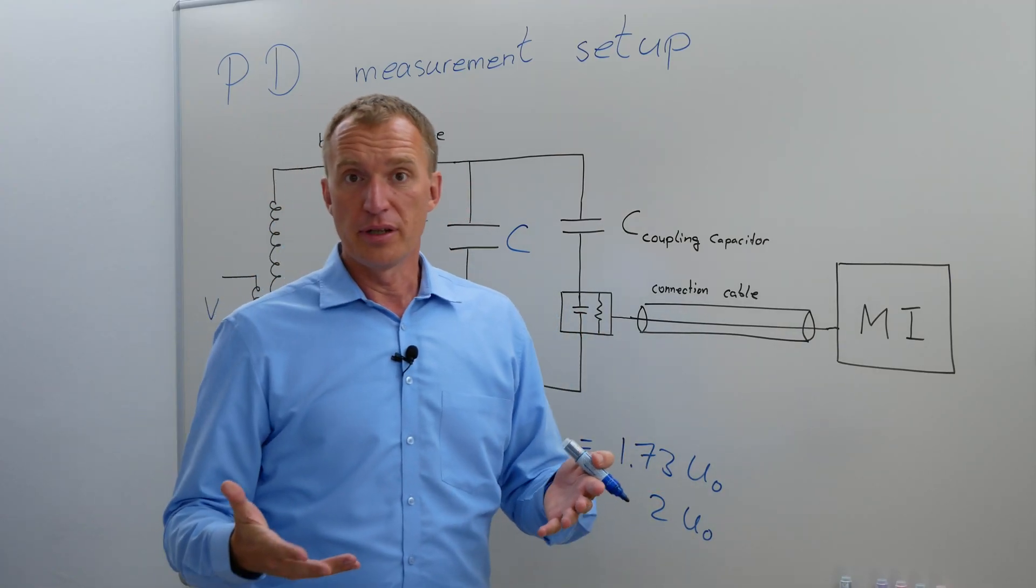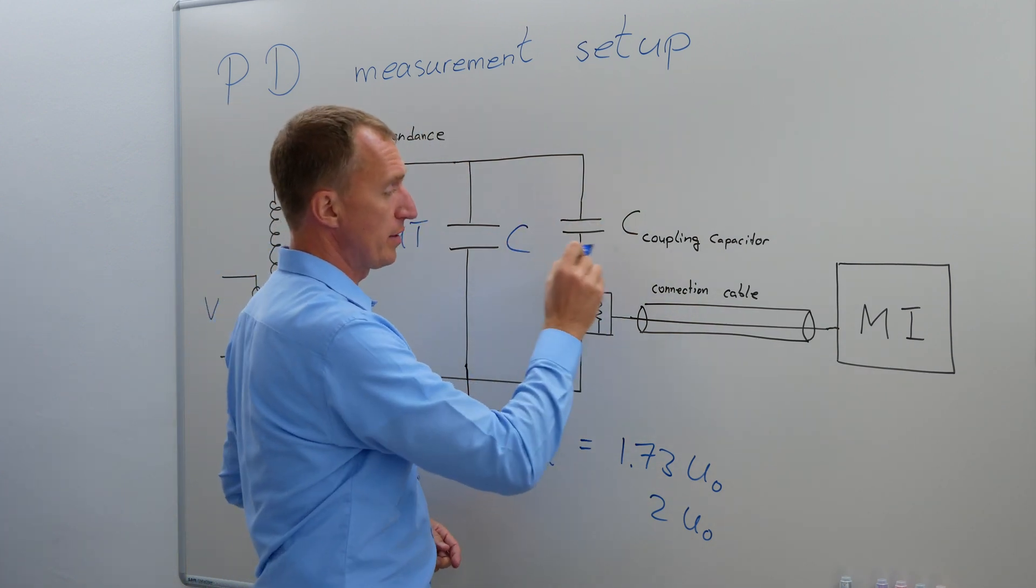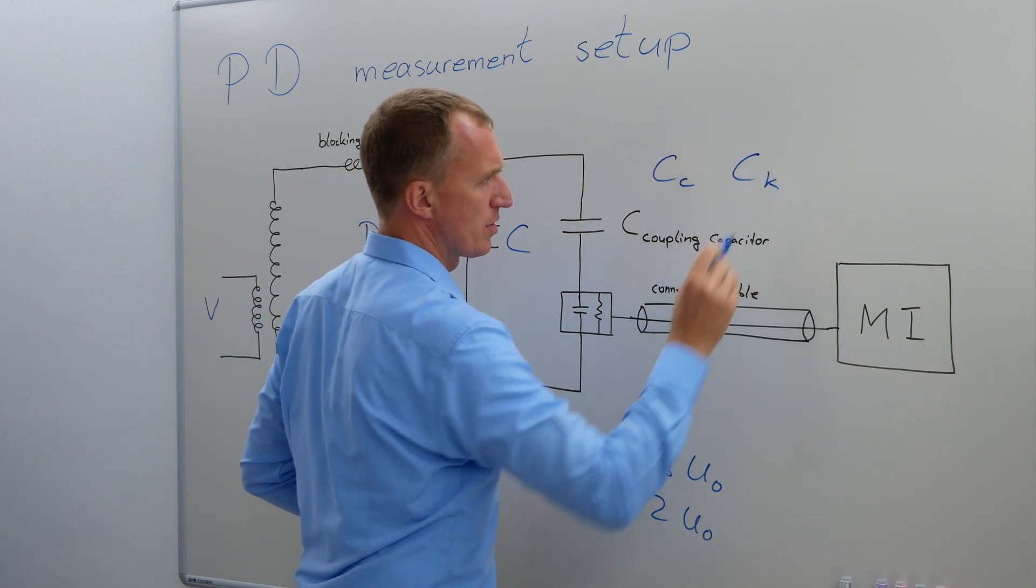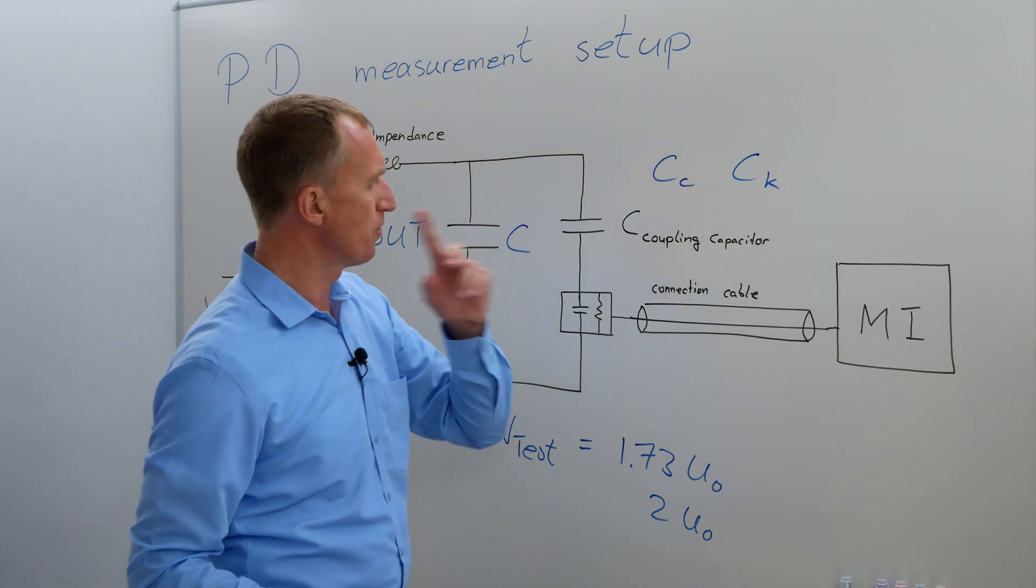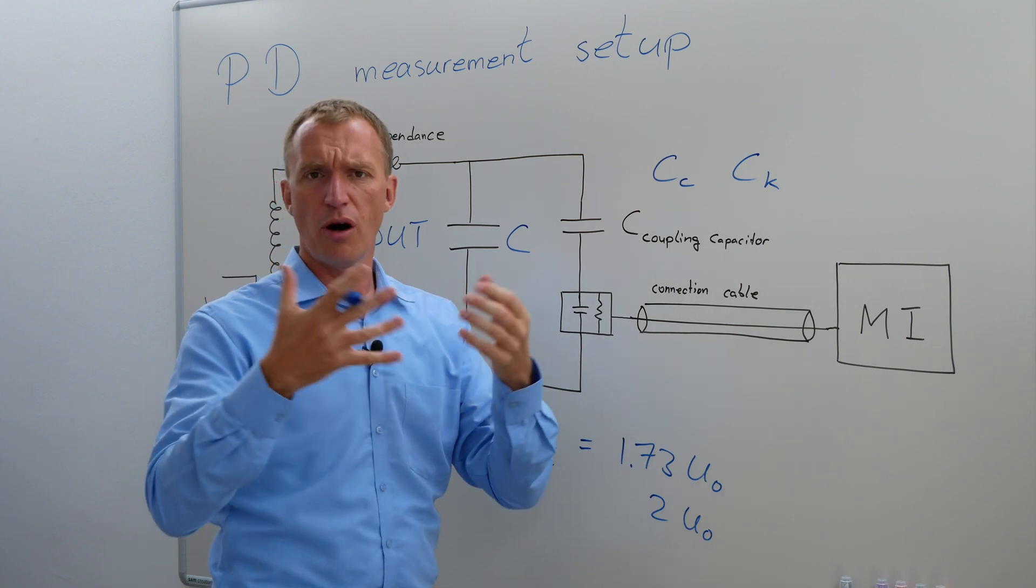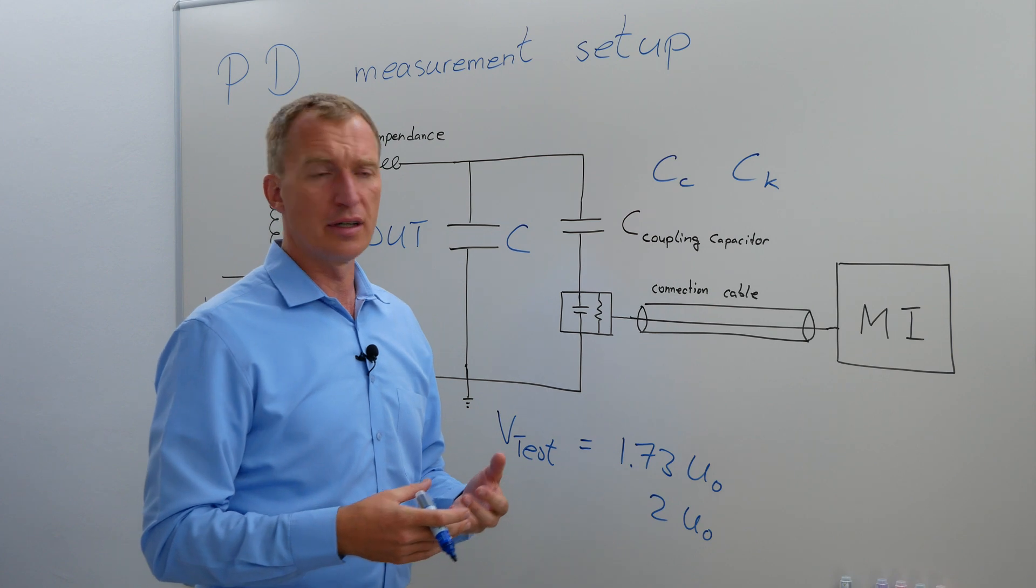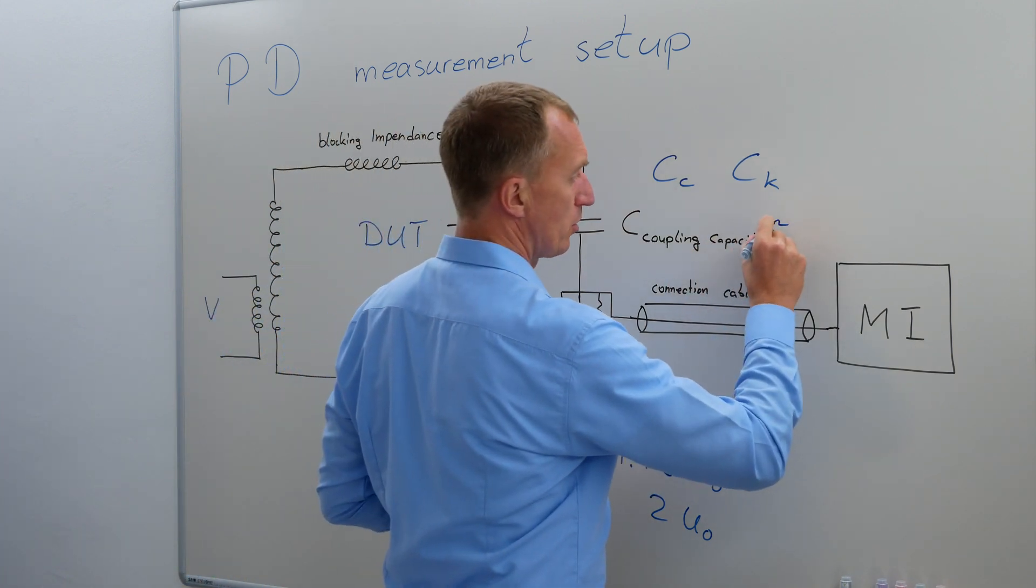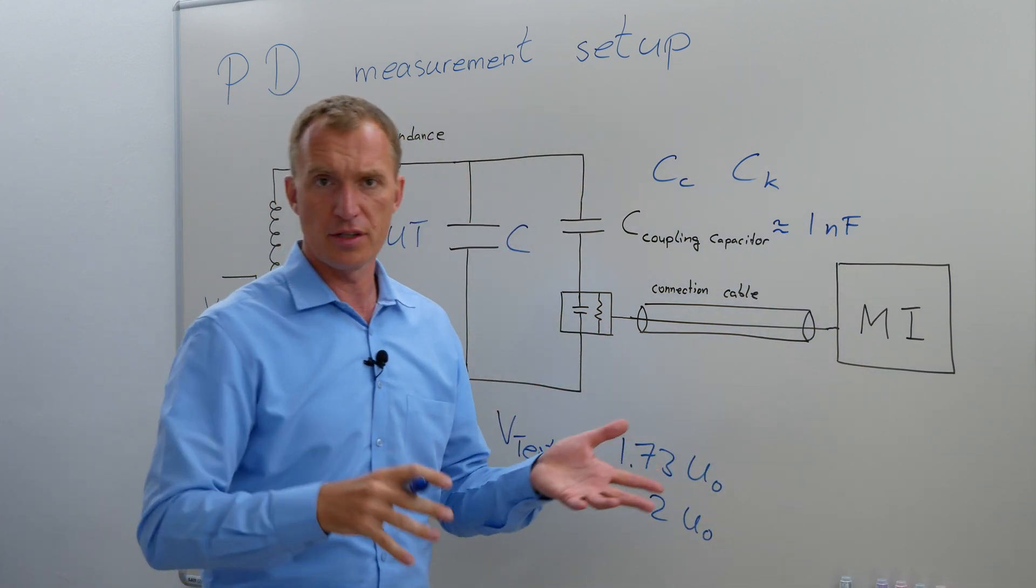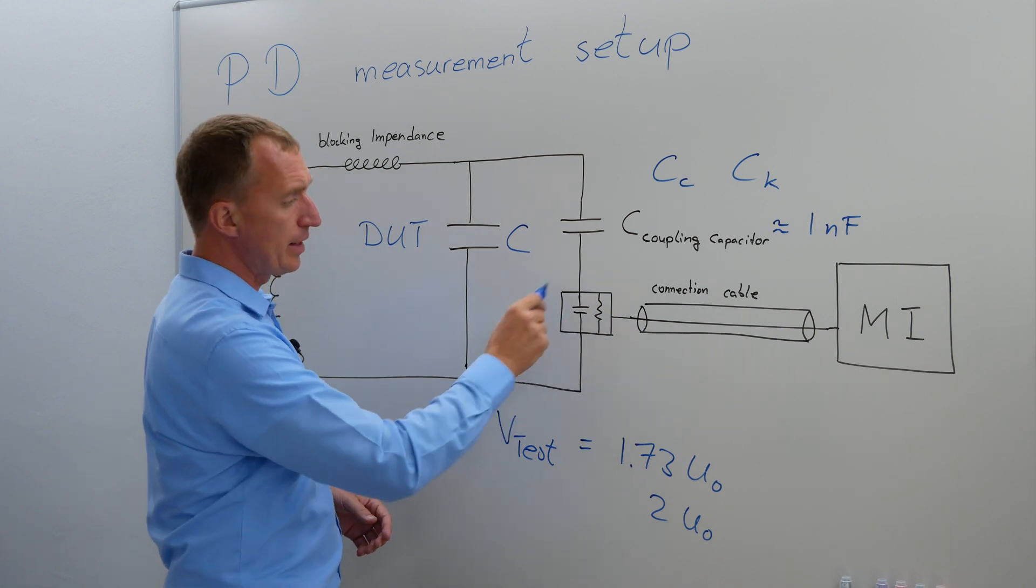This connection device could be a capacitive divider. Here it is displayed, this would be a capacitance with C, very often abbreviated as CC or sometimes CK, at least in the German version. This stands for coupling capacitor. The coupling capacitor very often is a capacitor that you buy from somewhere and it's not uncommon to have a coupling capacitor of about one nanofarad. They can be bigger or smaller, but one nanofarad is a pretty common value.